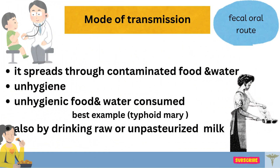The mode of transmission of typhoid fever is the fecal-oral route. It spreads through food and water contaminated with the feces of an infected person via unhygienic hands. A well-known example is Typhoid Mary — Mary Mallon, commonly known as Typhoid Mary — a cook who infected between 51 and 122 people with typhoid fever in the USA. She was identified as an asymptomatic carrier of Salmonella Typhi. It can also be transmitted by drinking raw or unpasteurized milk, so we should always eat healthy food.